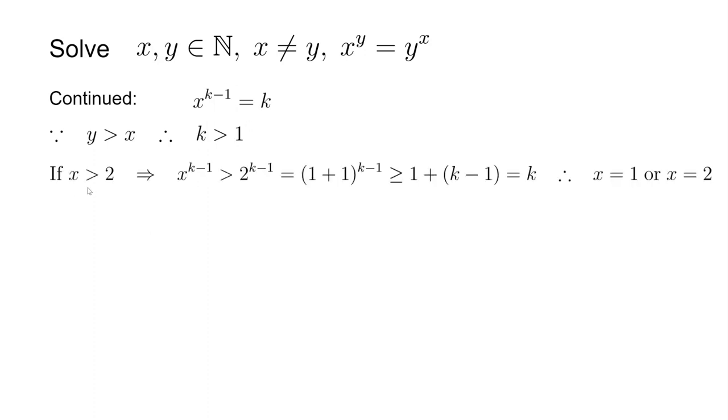We want to evaluate if x is larger than 2. Then x to the degree of k minus 1 is larger than 2 to the degree of k minus 1, which is 1 plus 1 to the degree of k minus 1. We can apply the binomial expansion here. This is larger or equal to the first two terms of the expansion, which is 1 plus k minus 1 times 1, which is k.